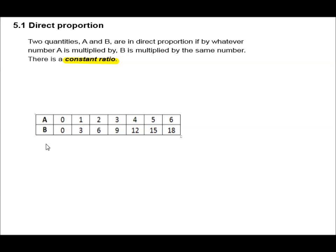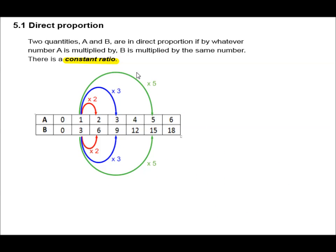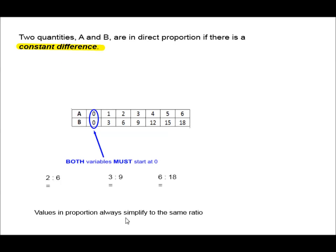Two quantities, A and B, are in direct proportion if, by whatever number we multiply A, we must multiply B by the same number. For example, 1 multiplied by 2 is 2, then 3 multiplied by 2 is 6. 1 multiplied by 3 is 3, and 3 multiplied by 3 is 9. 1 multiplied by 5 is 5, and 3 multiplied by 5 is 15. The two quantities are in direct proportion if both values start at 0.